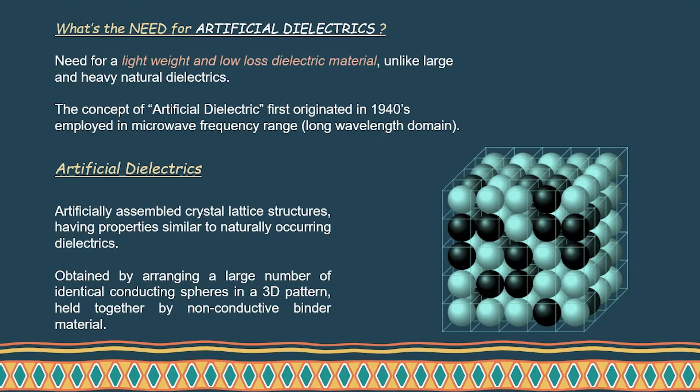Let's see why we need artificial dielectrics. There is a need for lightweight and low-loss dielectric material, since all naturally occurring dielectrics are generally heavyweight. The concept of artificial dielectrics first originated in the 1940s and was employed in the microwave frequency range — that is, long wavelength — because achieving short lattice spacing at short wavelengths was very difficult and impractical at that time.